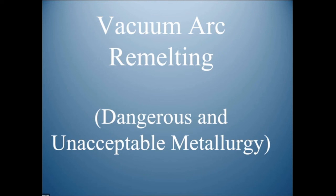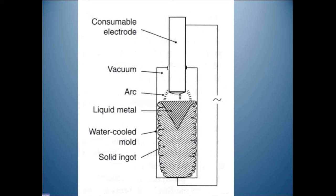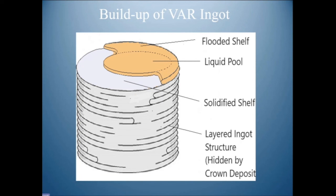I want to make the case that vacuum arc remelted steel is, unfortunately, dangerous steel. When the arc moves off-centre, the liquid pool moves off-centre, and the solid begins to form on one side, creating what we call a shelf.